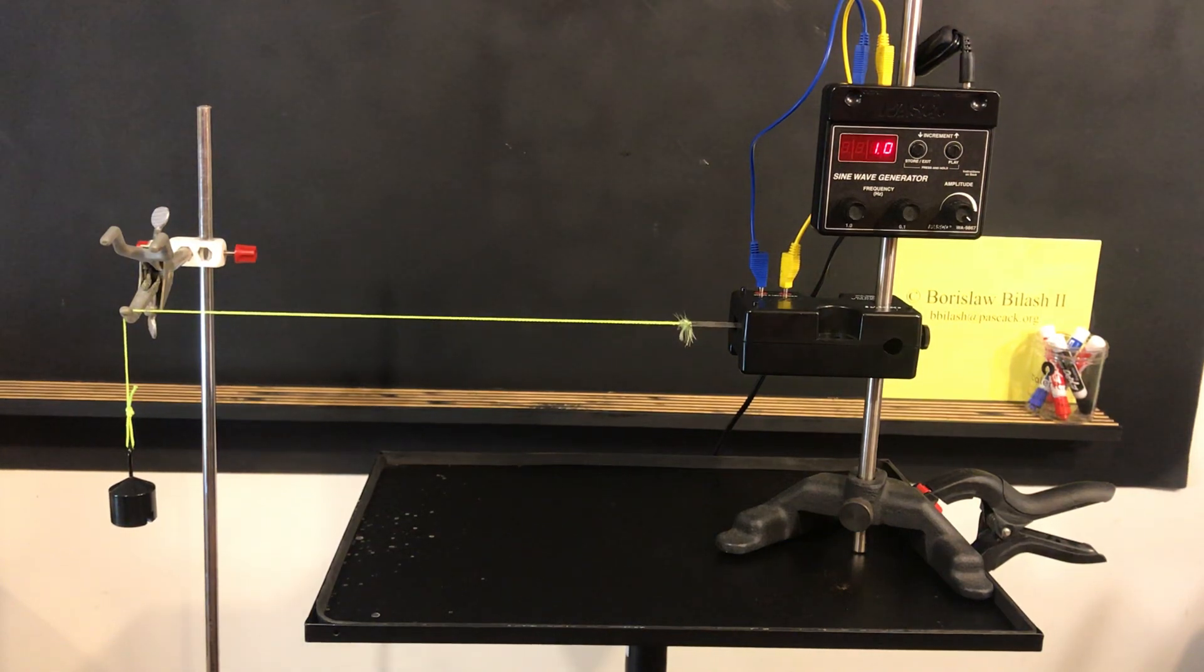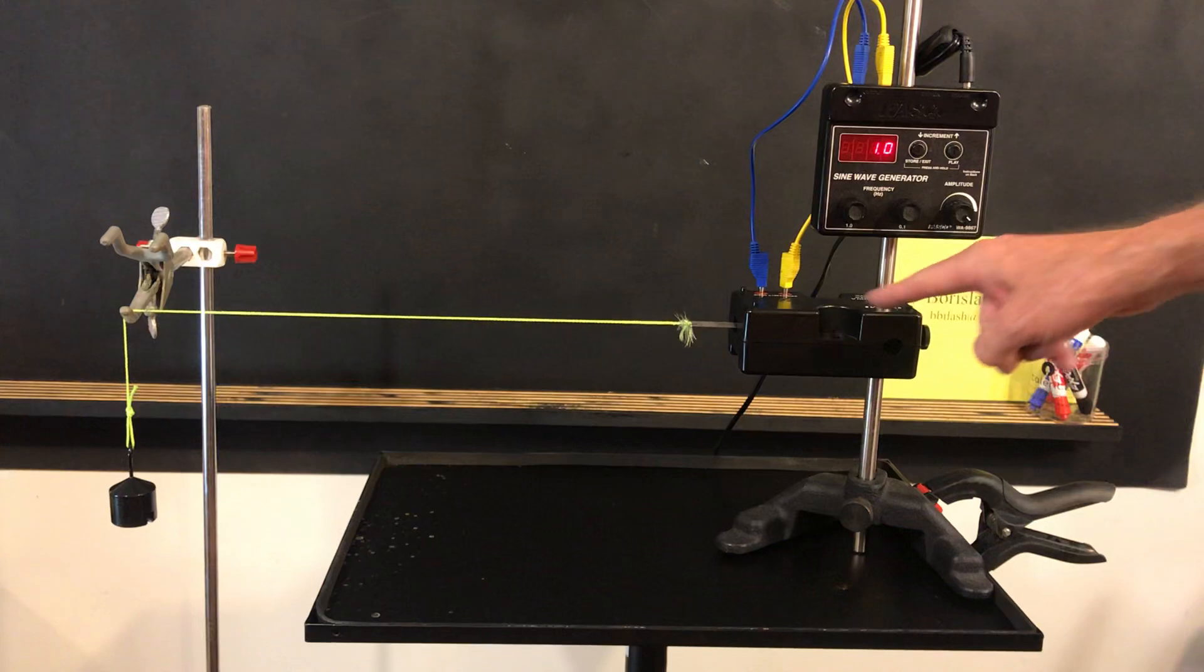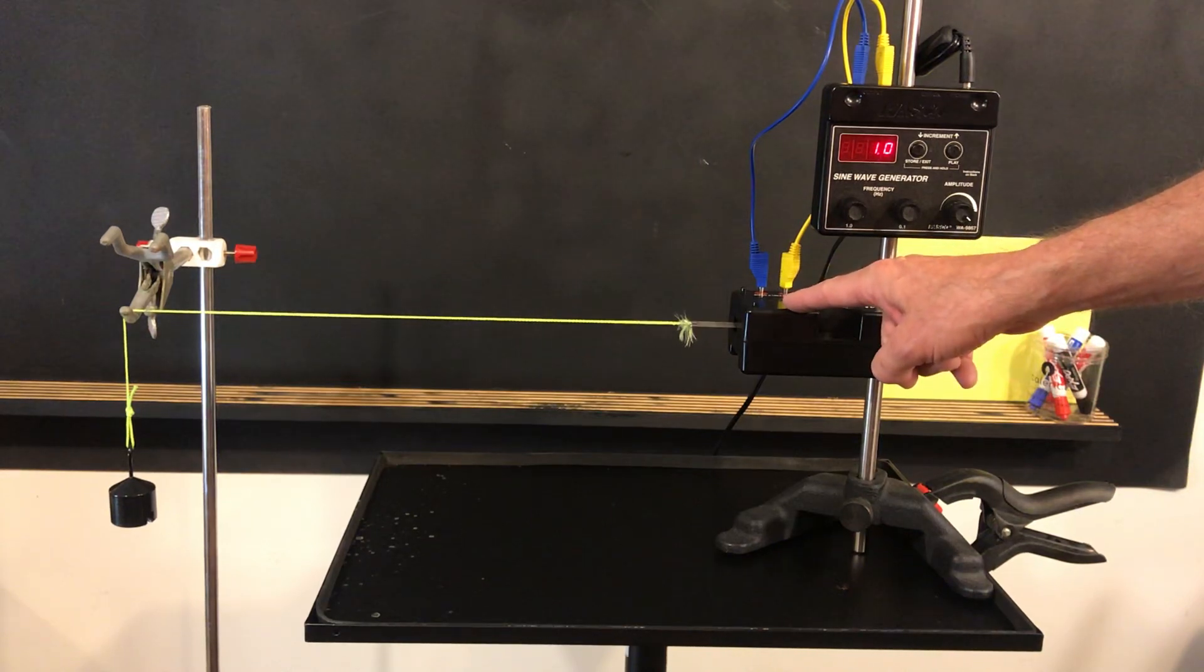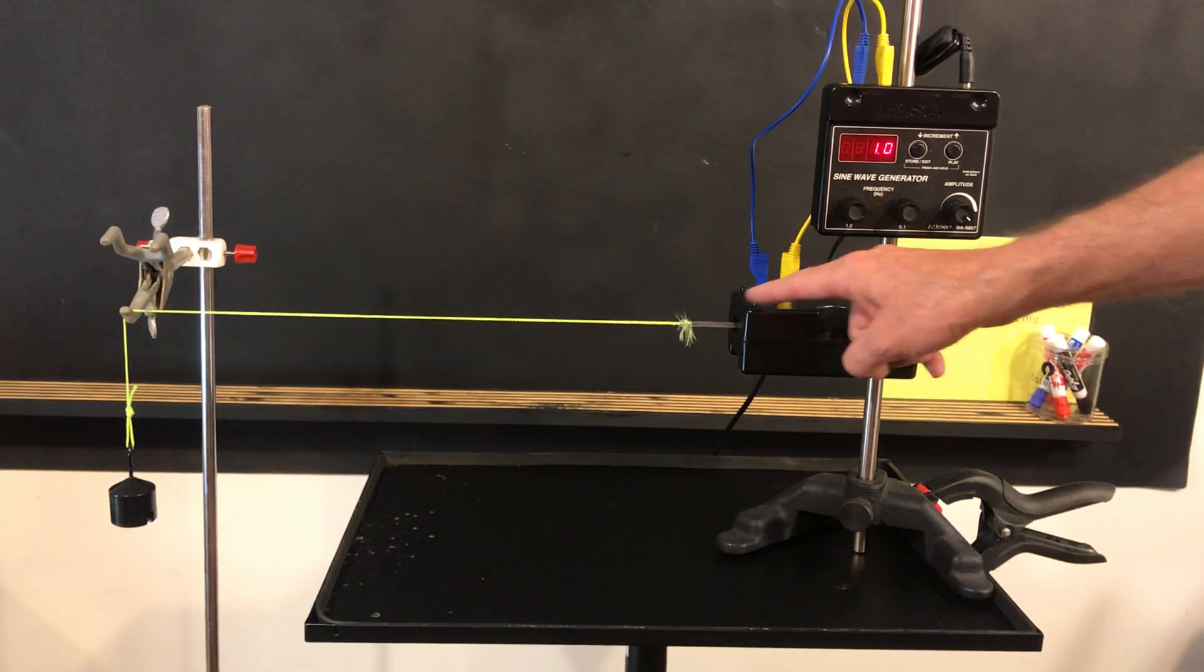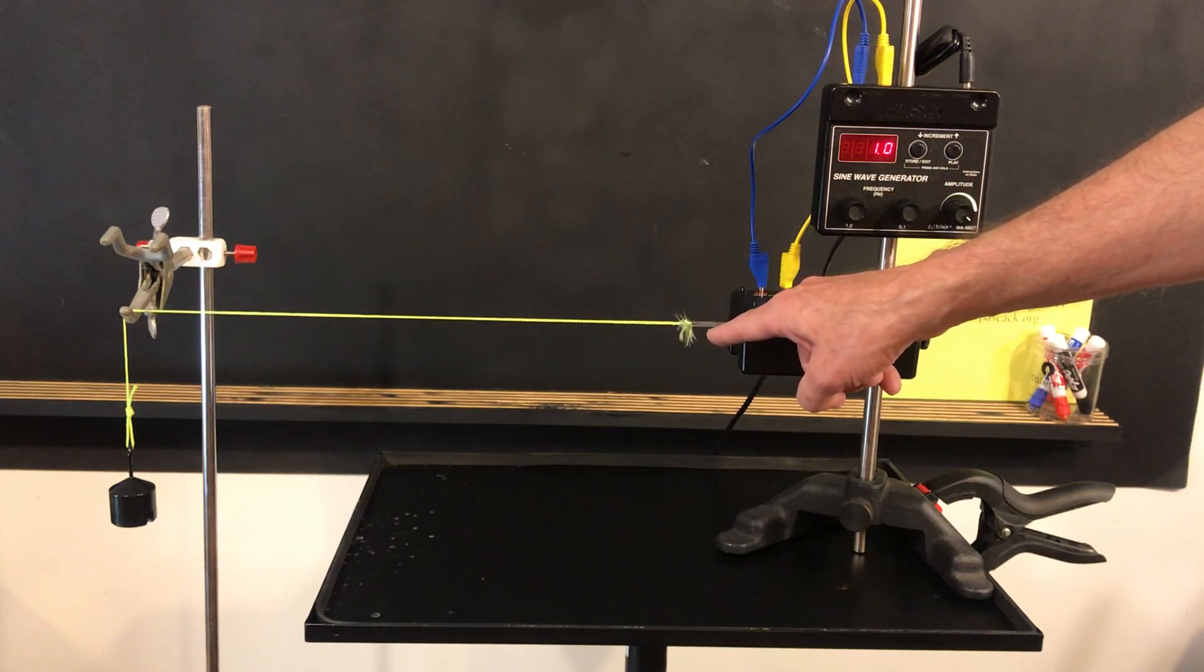This apparatus is known as a wave generator, and it is used to drive a wave into a string. It consists of two components. This first component here is called a string vibrator. Notice that it is attached to the string by this tail.